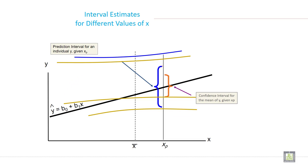Interval estimates for different values of x. This is y cap equals b0 plus b1 x, the regression line. This is the gap or error between predicted value and actual value. It shows the confidence interval for the mean of y given x and prediction interval for individual y given x.